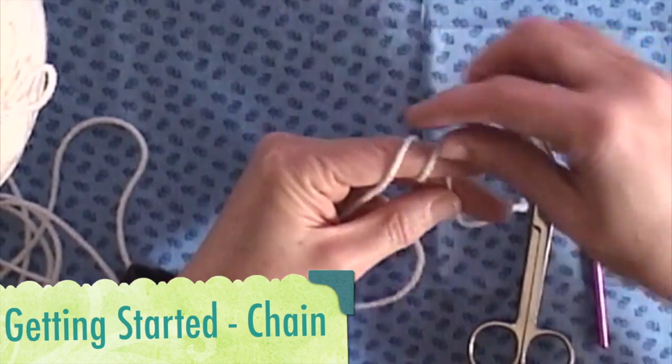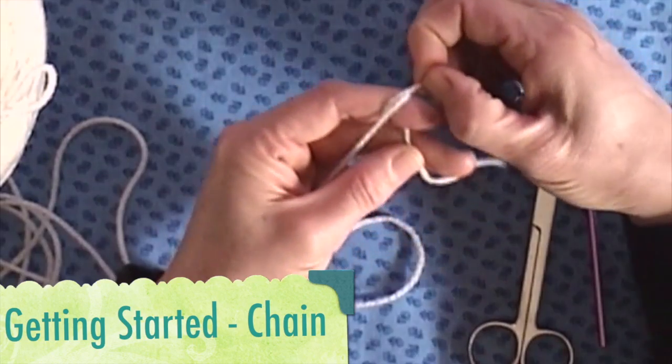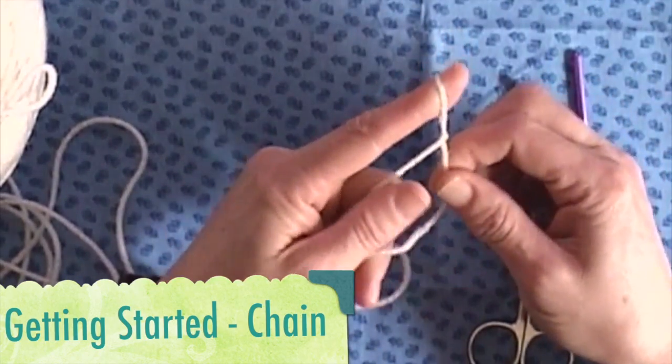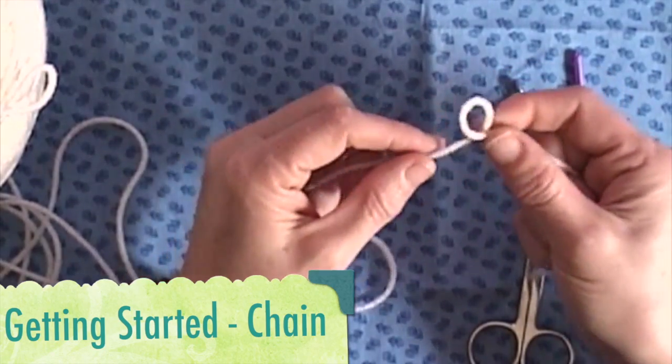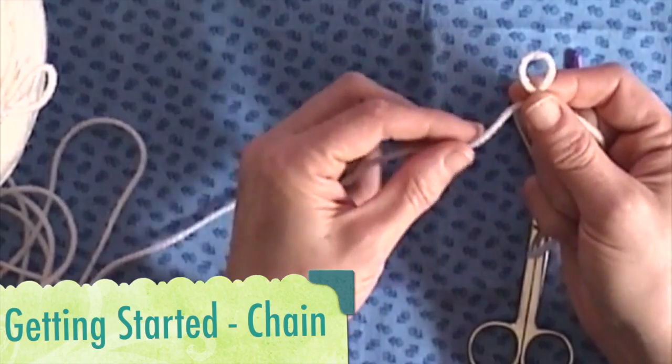Hold on to it, bring the back over the front once, back over the front and off the finger the second time. That will start your slipknot. The yarn that is actually attached to the ball, if you pull on it, it will become little.